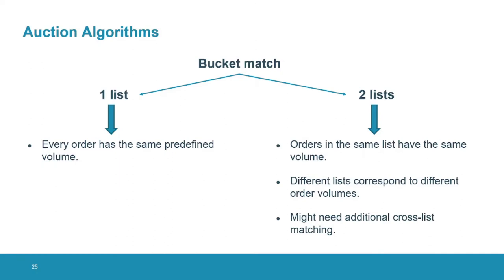To improve this, we introduced the version with two lists. The version with two lists is similar to the version with one list — inside the same list, orders have the same volume — but each list corresponds to a different volume. There will be a list with higher volume for investors wanting to submit very high volume, and a list of lower volume. It might happen that in one list there is some leftover buy volume, while in the other list there is some leftover sell volume, and in those cases we will need additional cross-list matching, matching the sell orders from the first list with the buy orders from the second list.